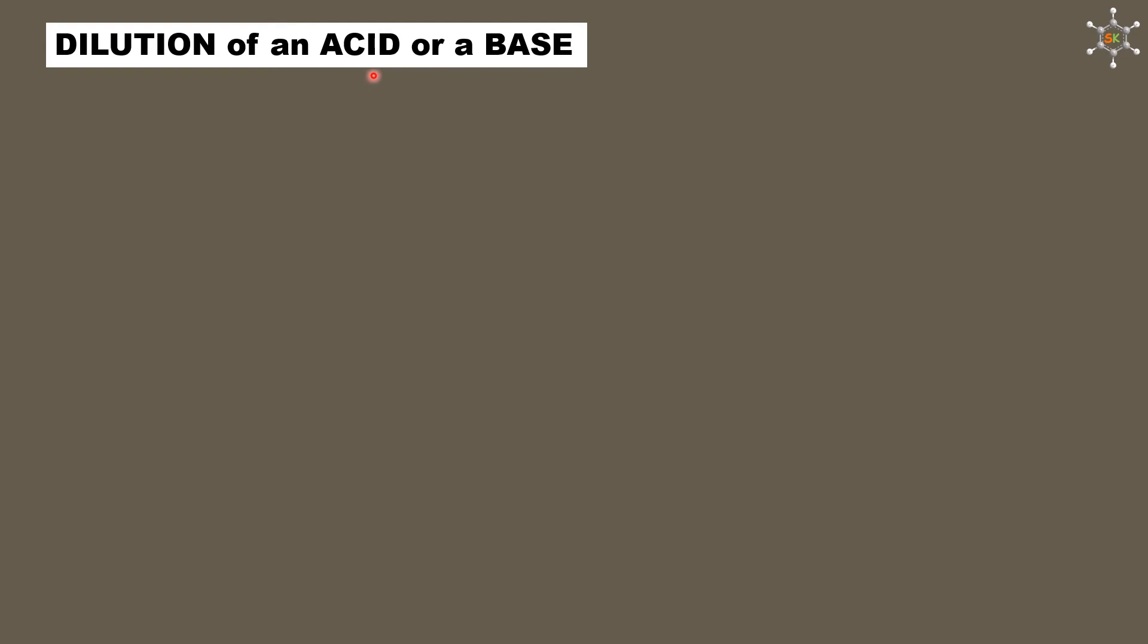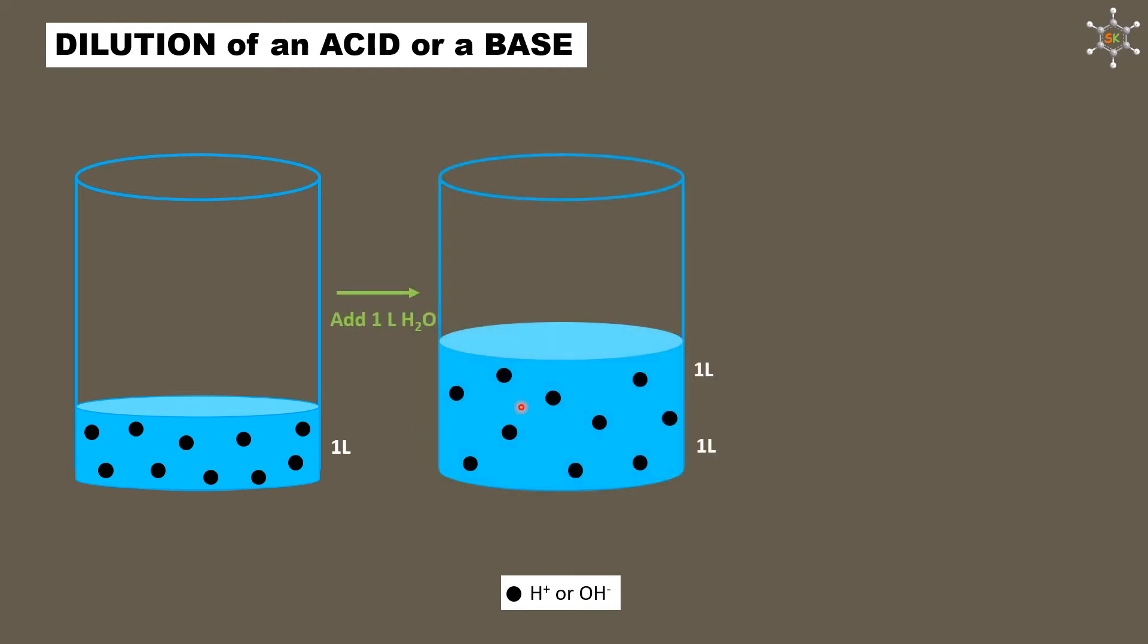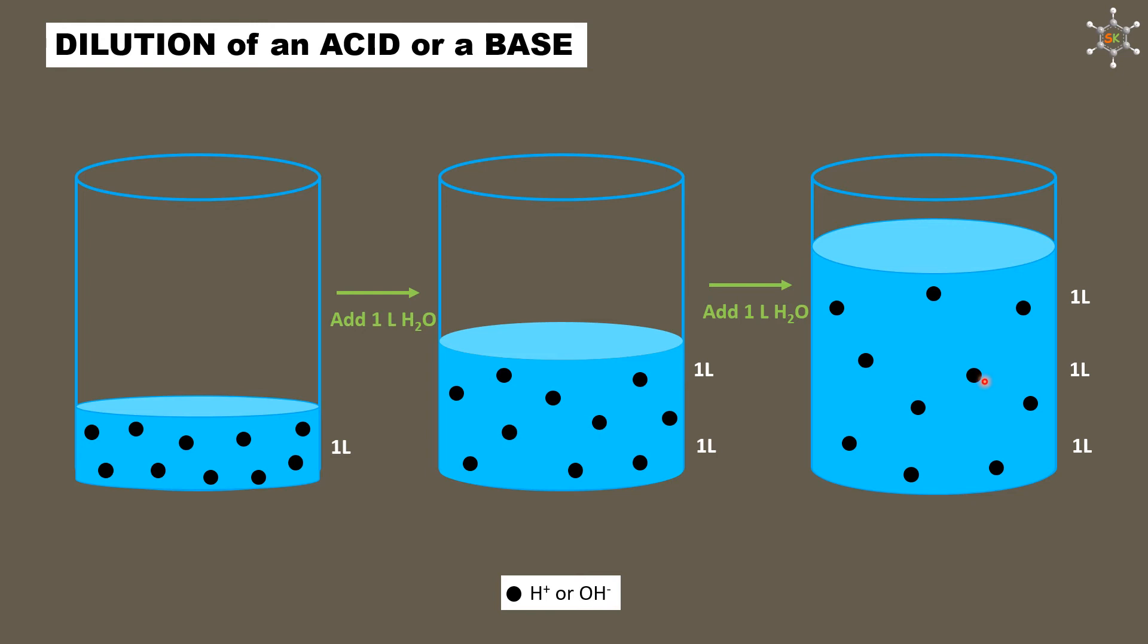Dilution of an acid or a base: Consider 1 liter water in a beaker. Add some amount of acid or base into this so that we will have 10 H plus ions or 10 OH minus ions in 1 liter solution. Now, let us add 1 liter water to this. This pushes us to a situation where we will have 2 liter solution which consists of 10 H plus or 10 OH minus ions. Again, let us add 1 liter water to this. That gives us 3 liter solution consisting of 10 H plus ions or 10 OH minus ions.